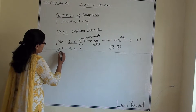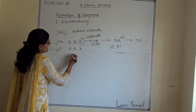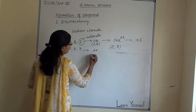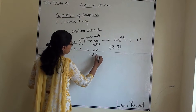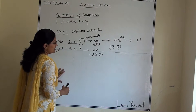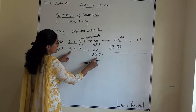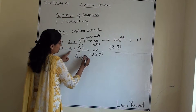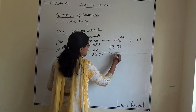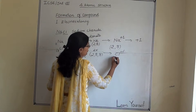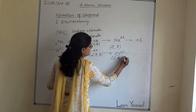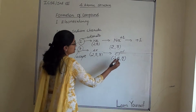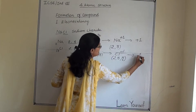What happens to chlorine? The nearest noble gas to Cl is argon, whose electronic configuration is 2, 8, 8. If Cl wants to be stable like argon, it has to accept one electron. When Cl accepts one electron, it becomes Cl⁻ with configuration 2, 8, 8 — because it accepted one electron and its valency becomes minus one.